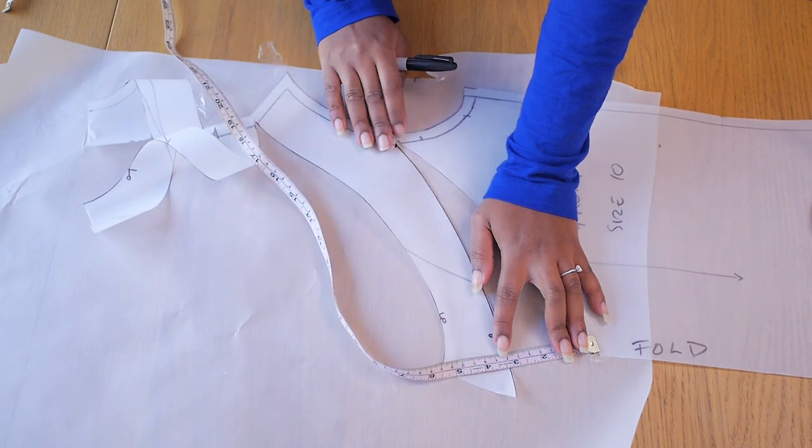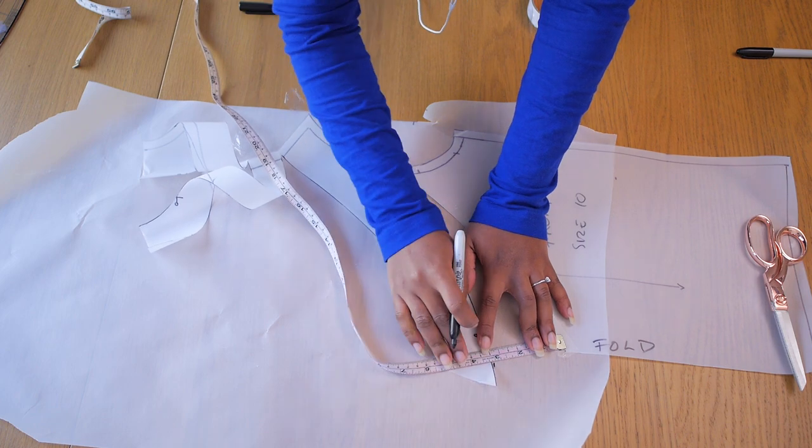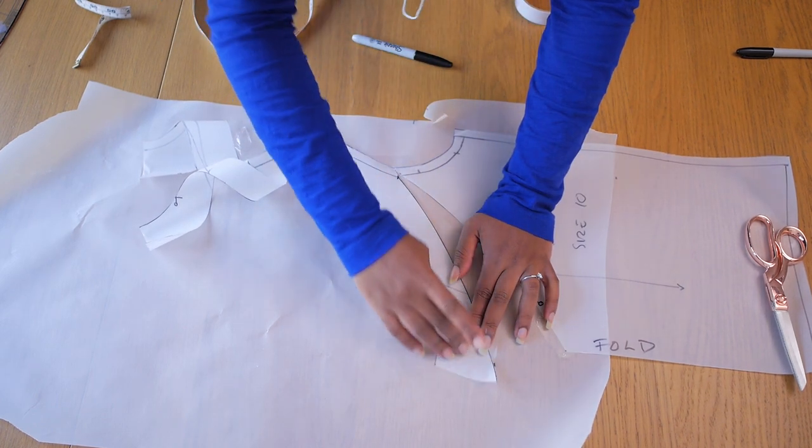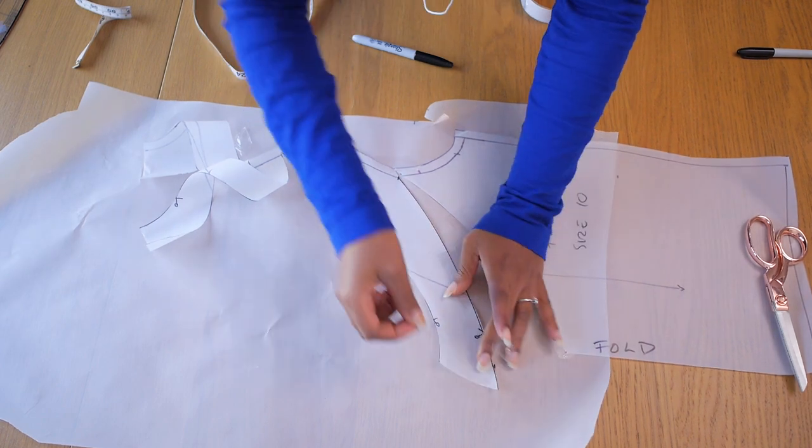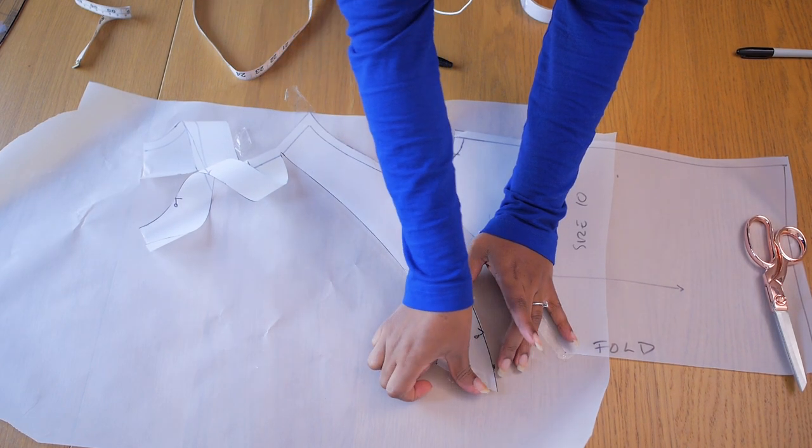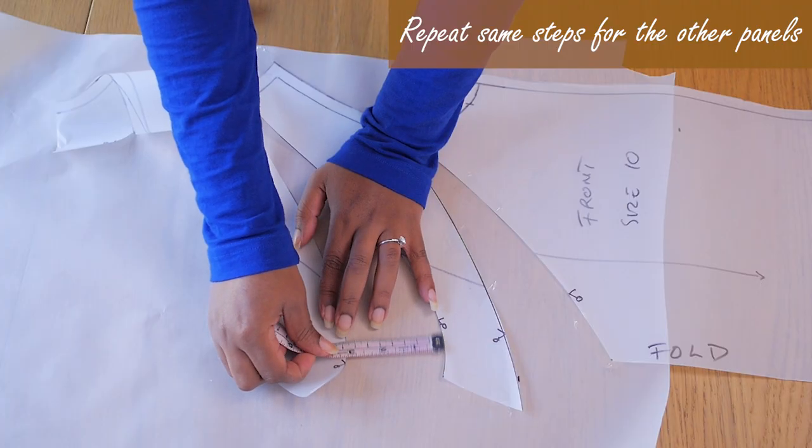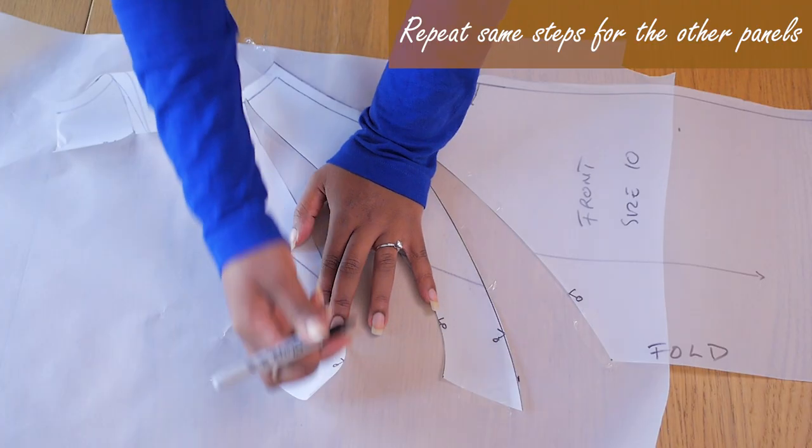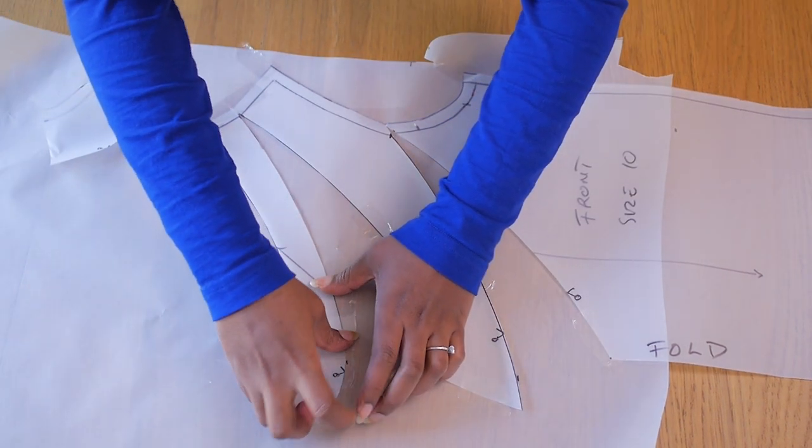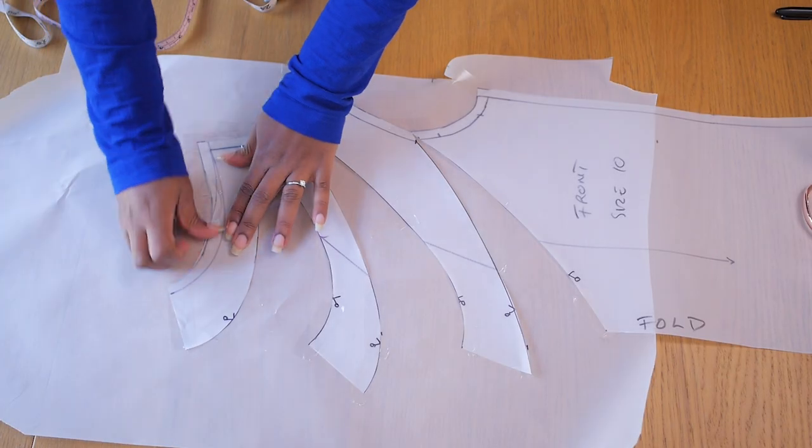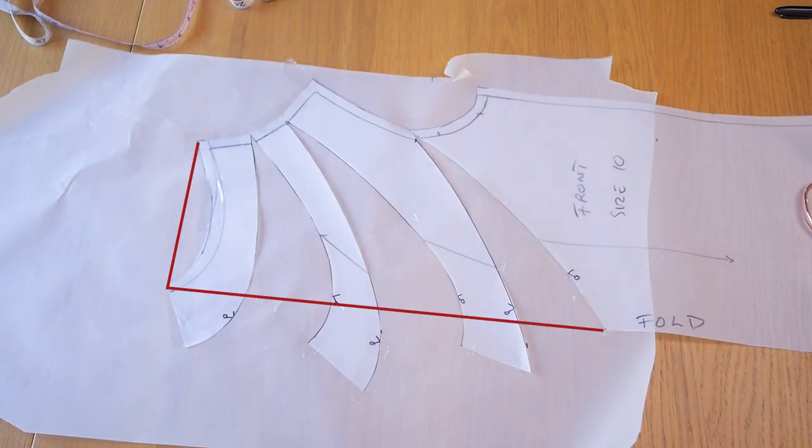Just know that the more you spread the panels the more drape this pattern would create. So if you spread it 10, 12, 15 and so on and so forth, the draping along the neckline is going to be more because you are adding more volume into the neckline of this pattern here. So I'm just taping down my first panel and then going ahead to repeat the same thing across the others, spreading by seven centimeters and just taping the pattern down so it doesn't move before going ahead to move on to the next step.